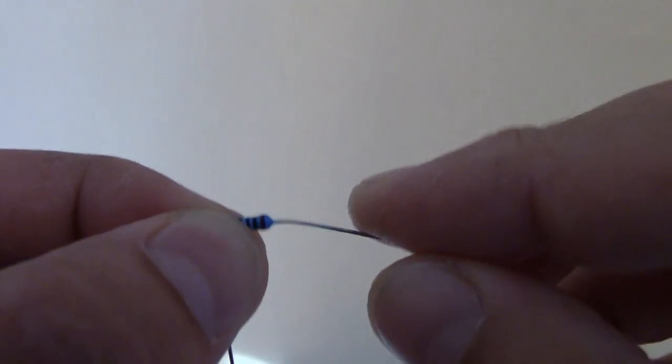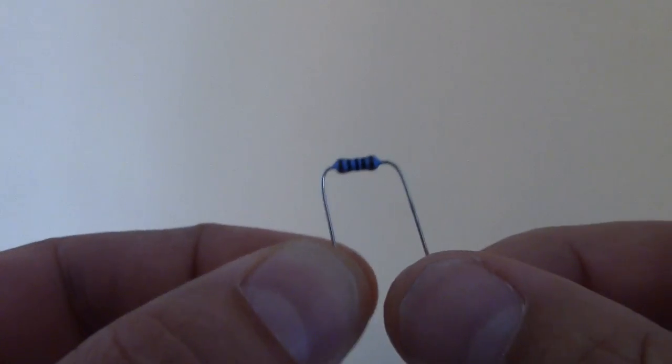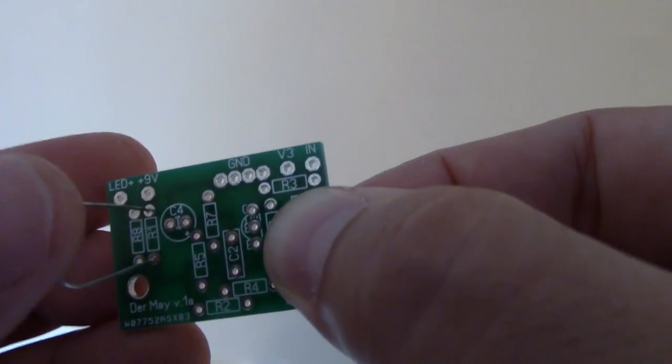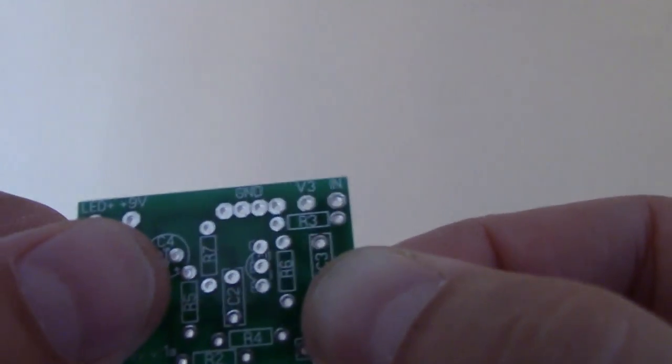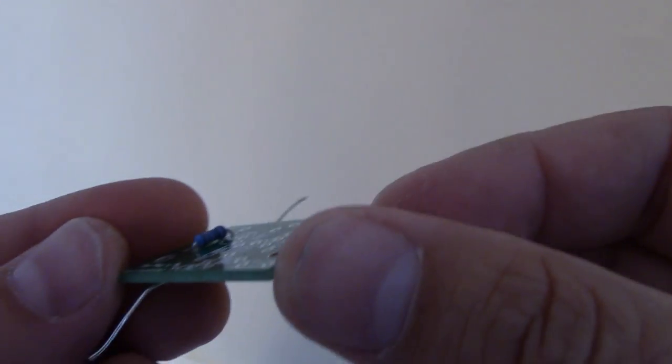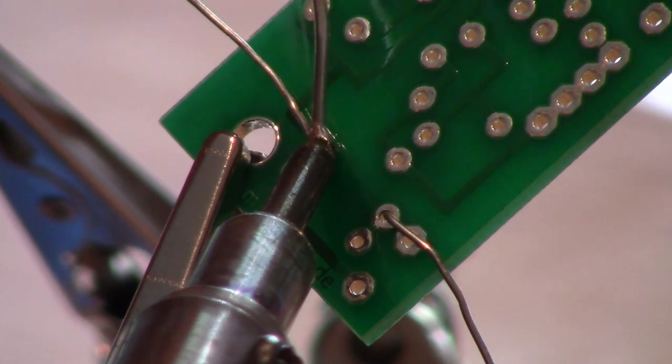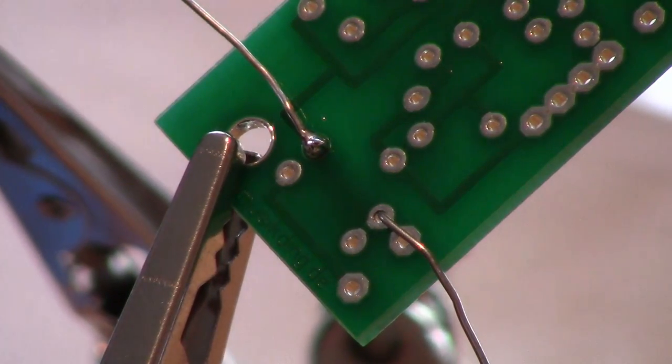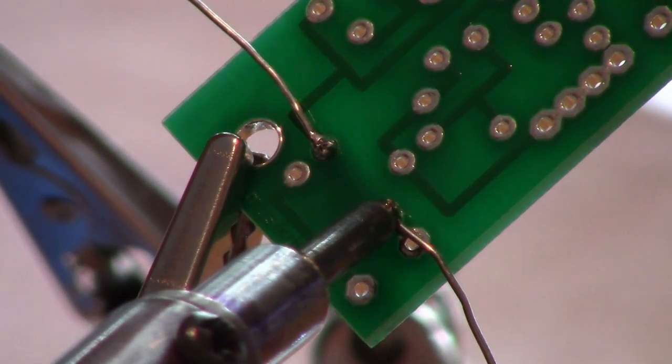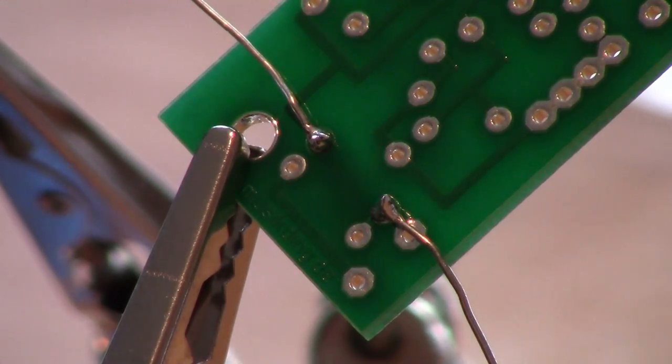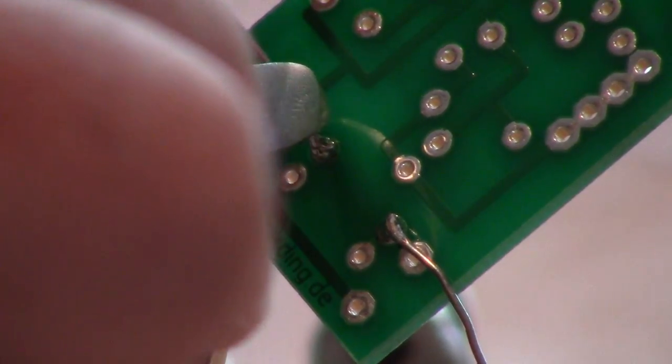Bend the leads of the resistor and pass them through the respective holes on the board. Bend the leads again on the back of the board to hold the resistor in place. Now apply heat for a few seconds with a soldering iron. Then solder the resistor to the board at both of the leads. After this, trim the excess leads using a small set of snips.